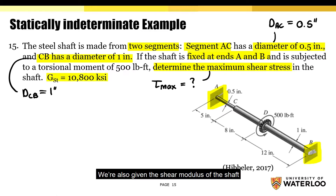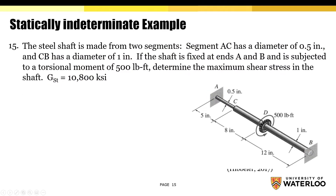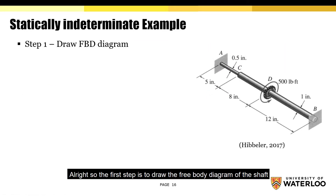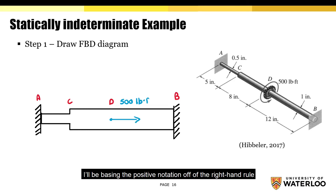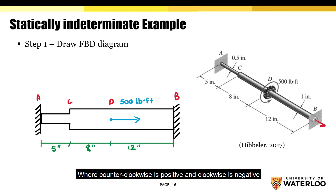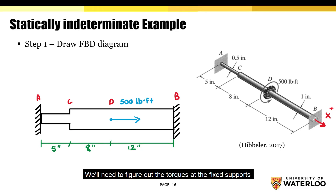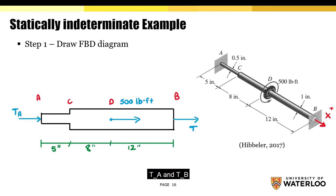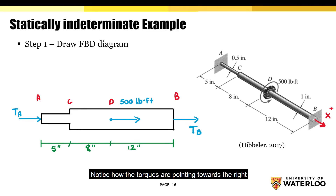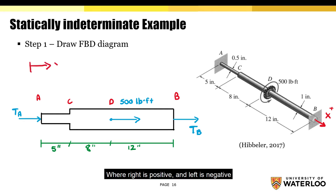We're also given the shear modulus of the shaft. The first step is to draw the free body diagram of the shaft. I'll be basing the positive notation off of the right-hand rule, where counterclockwise is positive and clockwise is negative. To determine the maximum shear stress, we'll need to figure out the torques at the fixed supports, so we'll replace the fixed supports with the corresponding reaction torques T-A and T-B. Notice how the torques are pointing towards the right, due to the positive notation where right is positive and left is negative.